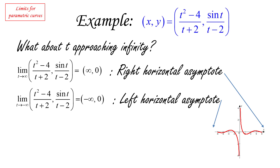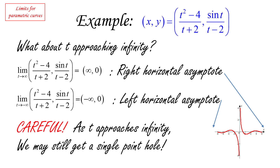Be careful, though. When we're dealing with regular functions and x goes to infinity, we're looking for horizontal asymptotes. However, with parametric curves, as t approaches infinity, we may even get a single point hole. Of course, infinity is not a number so we can't reach it, but there may be situations where the curve actually approaches a single point hole. You'll see that in some of the examples we work out.